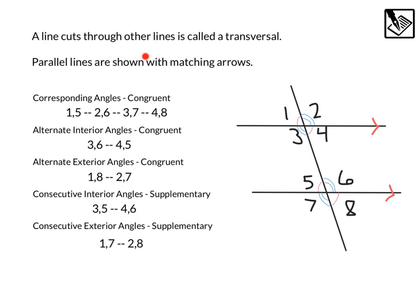A line that cuts through other lines is called a transversal. We can see this line is cutting across both of those lines. If lines are parallel, we can represent them being parallel by using matching arrows on both of the lines. When we have a transversal and two parallel lines, we form lots of special relationships.